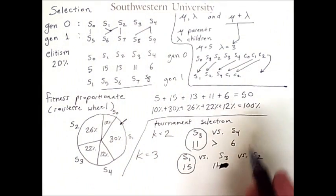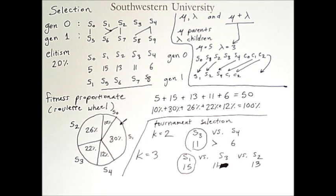As you can see, there are many different ways to perform selection in evolutionary algorithms. All of them will take a population and give you another population which in general should be slightly better. If you repeat this process over and over again, you'll get better and better individuals in your population.